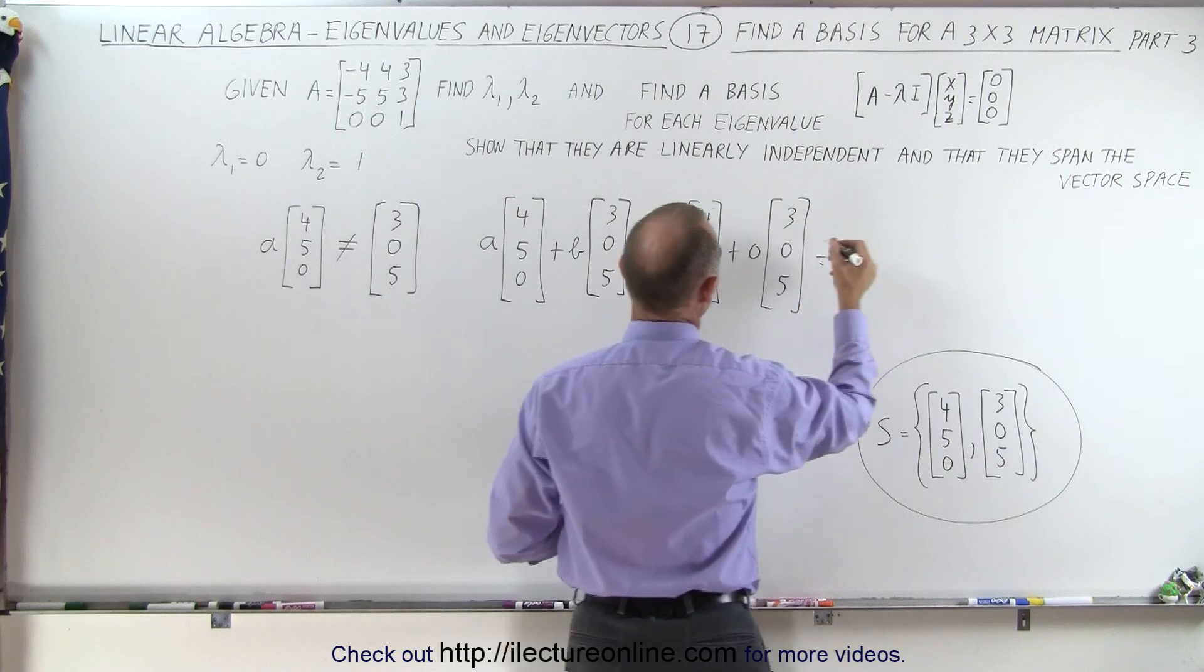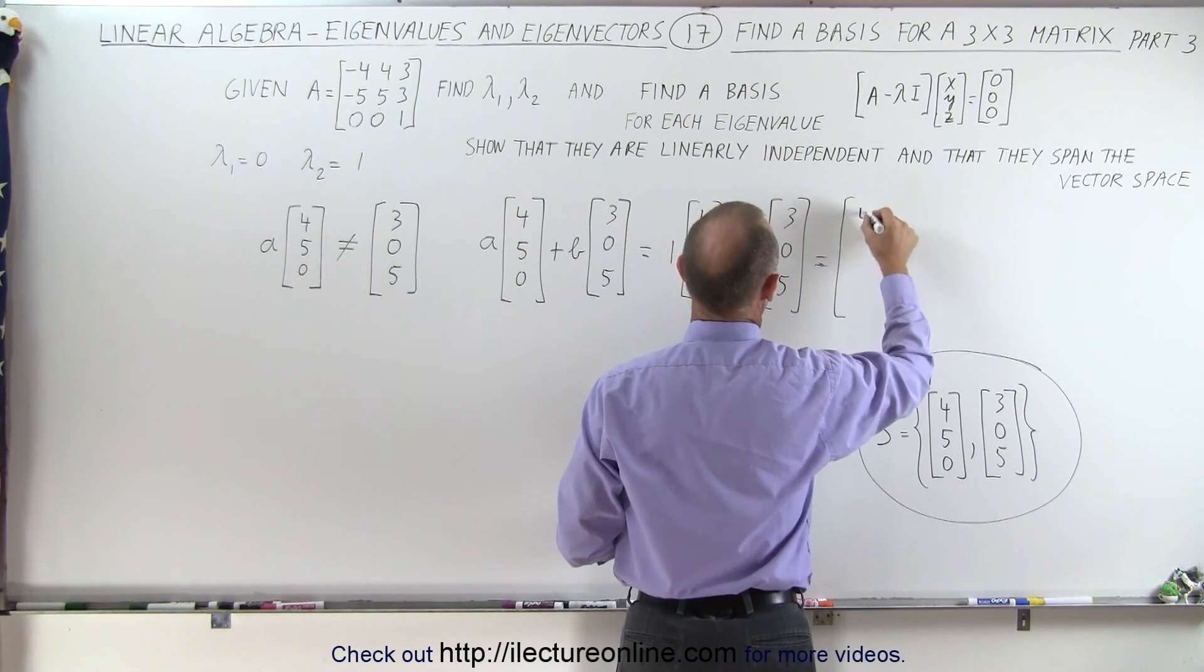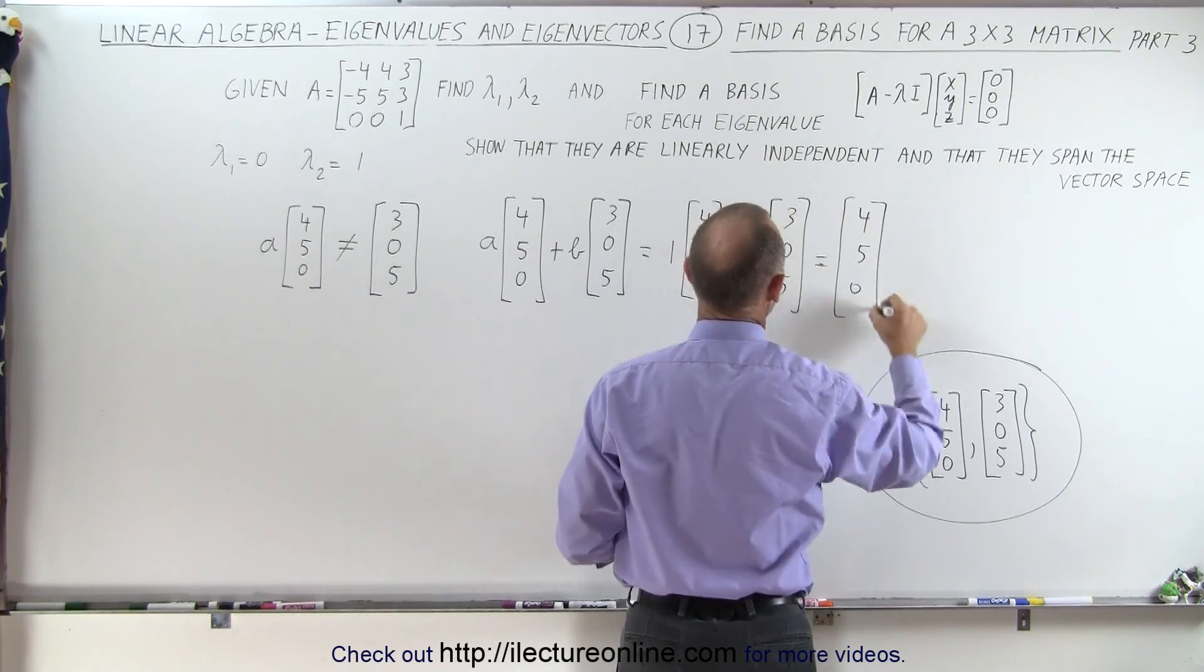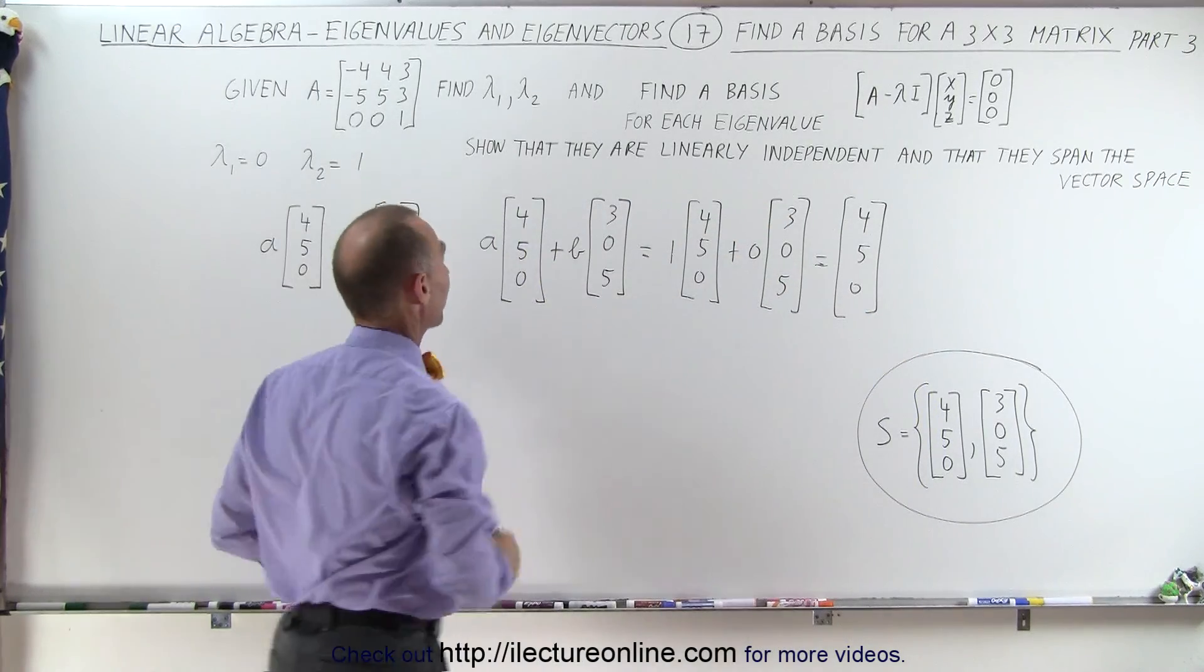That gives us exactly [4, 5, 0] which is the first column in our matrix here. That's good.